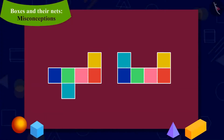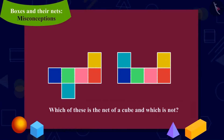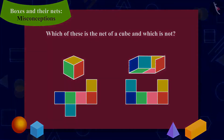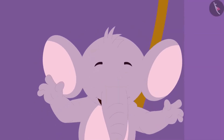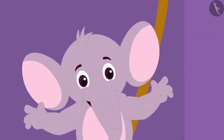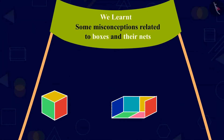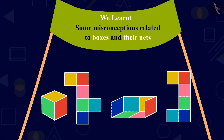Children, now can you tell which of these shapes is the net of a cube and which is not? If you want, you can stop the video and find the answer. Well done, kids. You have found the right answer. Appu was very happy to learn about the misconceptions related to the net from his uncle and he happily returned home. Kids, in this lesson, we have learned about some of the misconceptions related to boxes and their nets.